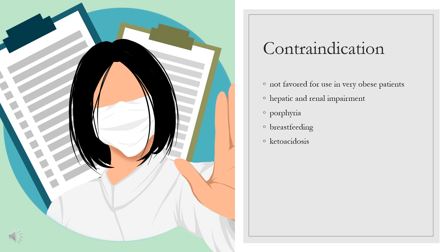Contraindication. Chlorpropamide and other sulfonylureas encourage weight gain, so they are generally not favored for use in very obese patients. Metformin (glucophage) is considered a better drug for these patients. Sulfonylureas should be used with caution or generally avoided in patients with hepatic and renal impairment, patients with porphyria, patients who are breastfeeding, patients with ketoacidosis, and elderly patients.